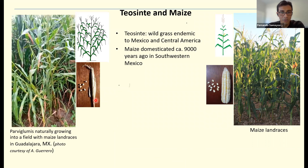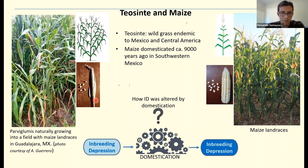We study inbreeding depression in two grasses: teosinte and maize. Teosinte is a wild grass endemic to Mexico and Central America, and maize was domesticated from teosinte approximately 9,000 years ago in southwestern Mexico. I am showing the morphological differences between the two species. The main question we ask in this project is how inbreeding depression changed through the process of domestication — in other words, how was inbreeding depression altered by domestication.